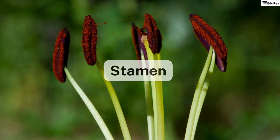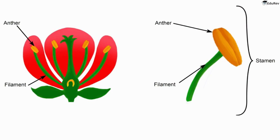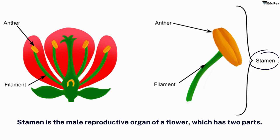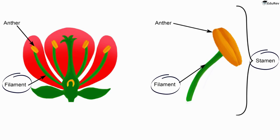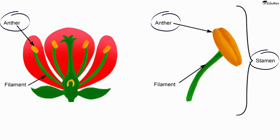The structure of stamen: if you look at the figure, you'll see a typical stamen. It is the male reproductive organ of a flower, which has two parts. The first part is a long and skinny stem called the filament. The second part is called the anther, which is located at the top of the filament and usually looks like it has two parts. The bottom of the filament is attached to either the thalamus or the petal of the flower.